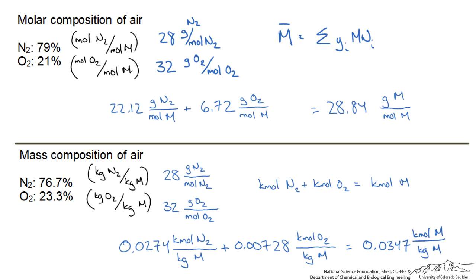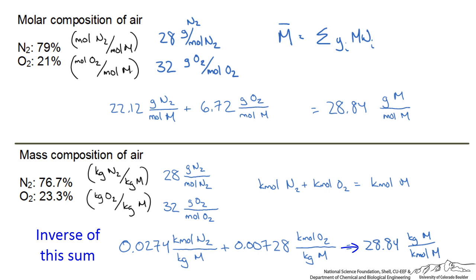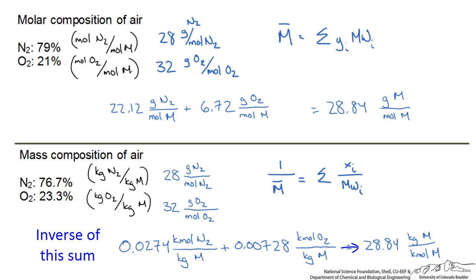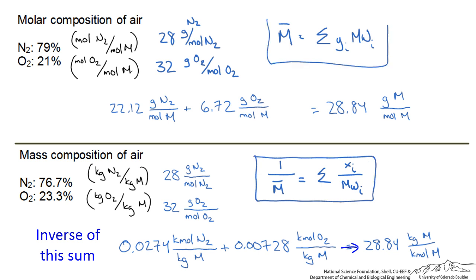If we want the average molecular weight we need to take the inverse of this, and when we do that we get the same answer as before. So the rule of thumb when given a mass composition is: the reciprocal of the average molecular weight is equal to the summation of each mass fraction divided by its respective molecular weight. You can see these formulas are vastly different and it is important to use the appropriate one depending on the composition you are given.